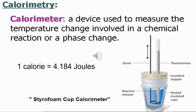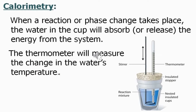For this experiment we're going to use the styrofoam cup as our calorimeter, because this material is a good insulator. We assume that the styrofoam cup is a perfect insulator, meaning that there is no heat loss or gain from the surrounding to the system. When a reaction or phase change takes place, the water in the cup will absorb or release energy from the system. The thermometer will measure the change in the water's temperature, and we'll make sure the styrofoam cup is properly covered with the stopper to minimize heat release.